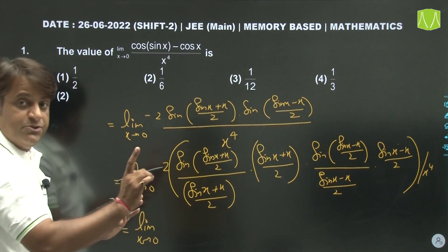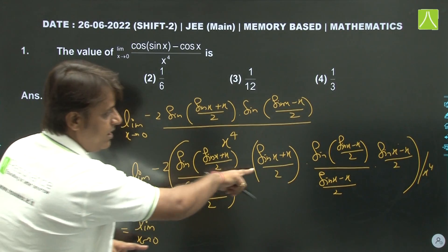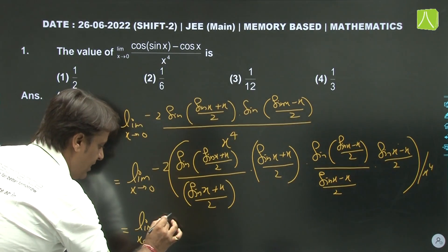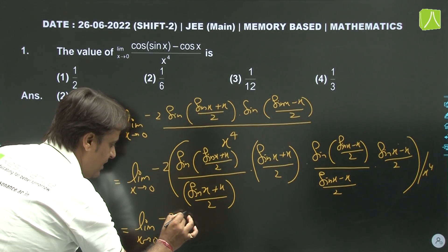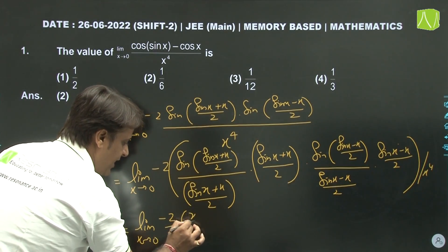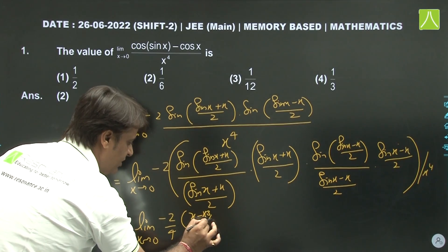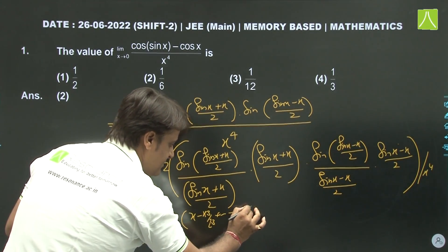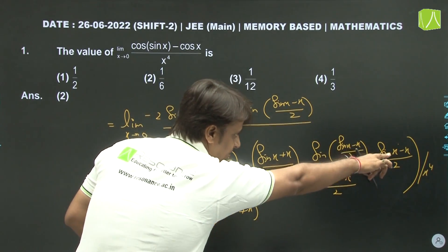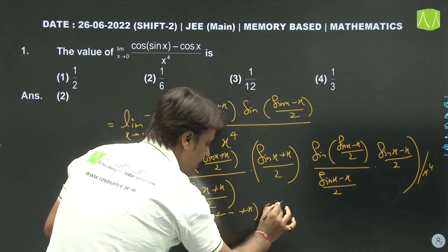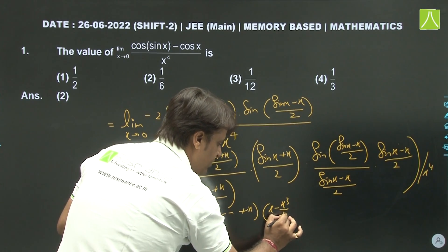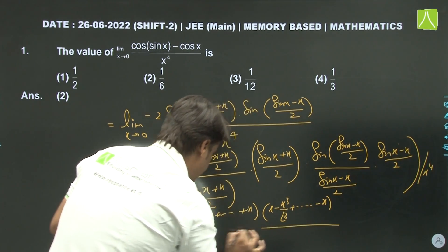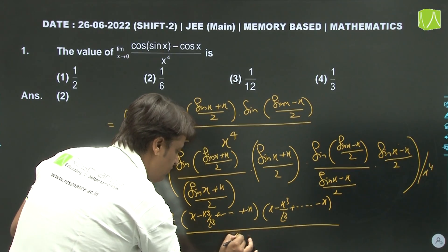Now we use the expansion of sinx: x minus x³/3! plus higher powers. So sin(sinx) minus x, when expanded, gives terms. From sin((sinx-x)/2), the numerator expansion contributes -x³/6 type terms. We take x⁴ common from both factors, so x⁴ cancels with the denominator x⁴.